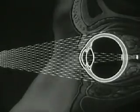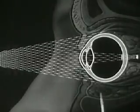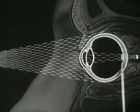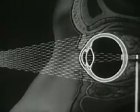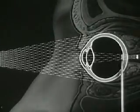But if a distant object approaches the eye, the angle between entering rays again grows larger. This increasing angle changes the direction of the light rays as they pass through the lens, so that the sharp image falls behind the retina.